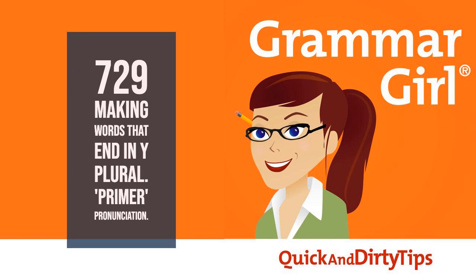An easy way to remember this is to think of that vowel before the Y. If you were to change the Y to I-E-S, you'd be piling two more vowels at the end of the word. Think how play would look if it were spelled P-L-A-I-E-S. That's a lot of vowels smashed together.